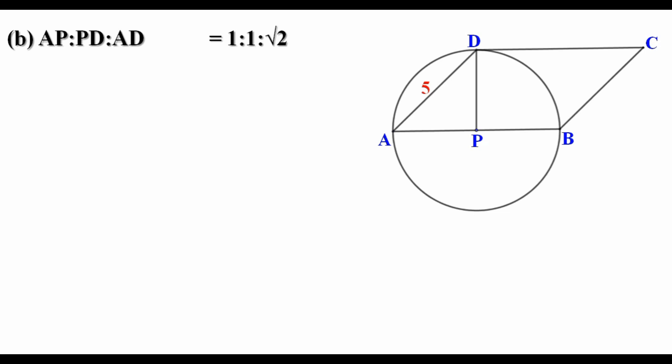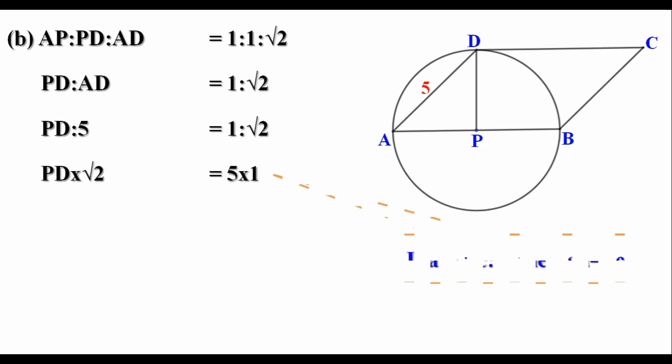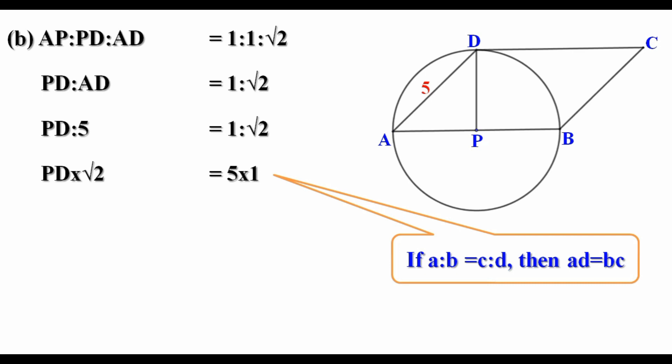Let us consider PD and AD. PD is to AD equal to 1 is to root 2. Here AD is 5, replacing we get PD is to 5 equal to 1 is to root 2. We know if A is to B equal to C is to D, then AD equal to BC, that is product of extreme terms equal to product of middle terms. Therefore PD into root 2 equal to 5 into 1, that is PD into root 2 equal to 5. Therefore PD equal to 5 by root 2. So AP also equal to 5 by root 2, because AP and PD are equal in length.